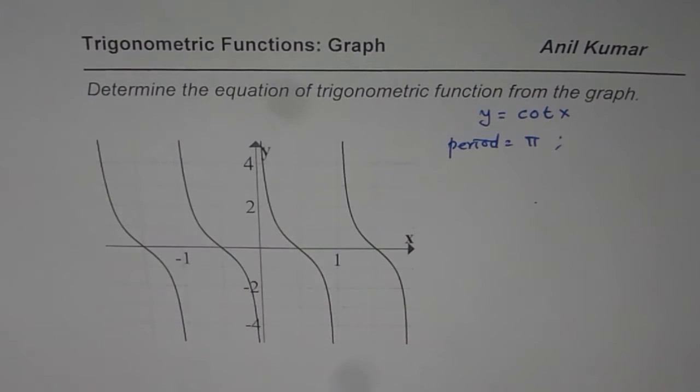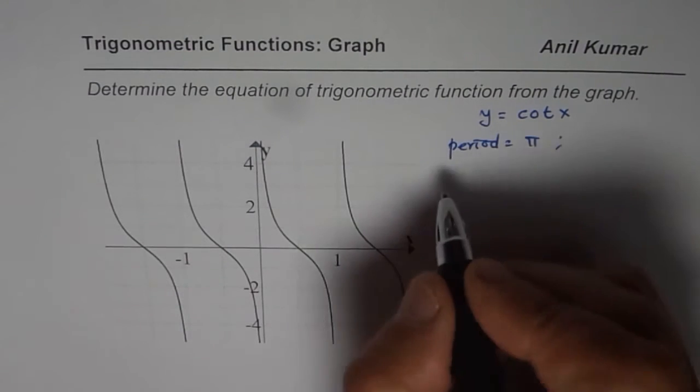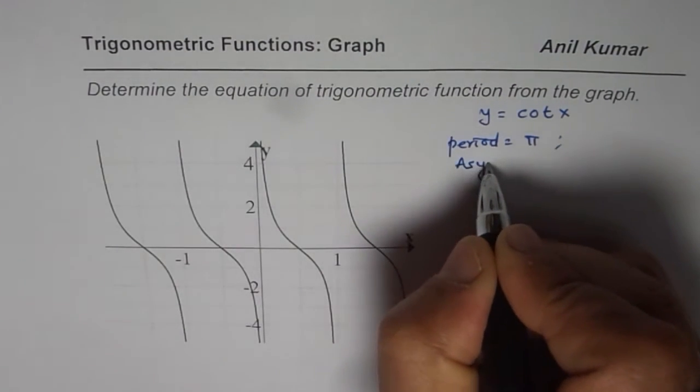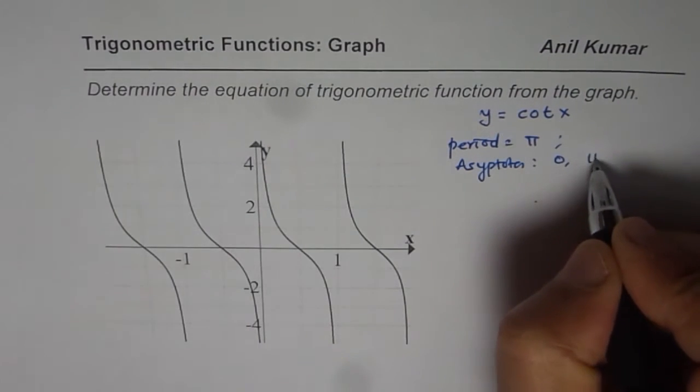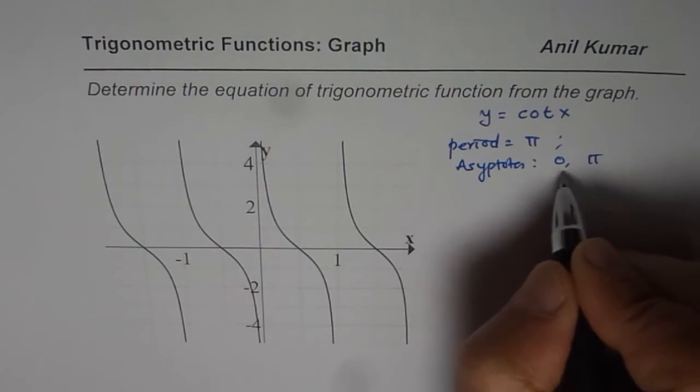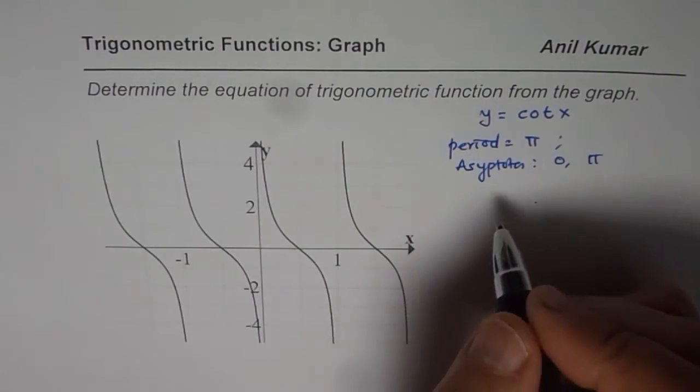Now for cotangent x, we know the asymptotes are at 0 and π. So the asymptotes are at 0 and π and that is also the period for cotangent x we are talking about.